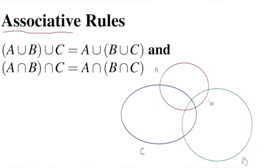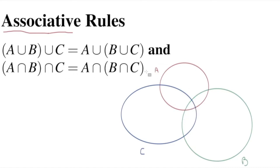Now let's look at the same pattern with the intersect operator. Taking A intersect B first gives the overlapping area of A and B, and then the intersection of that with C gives just a small triangular area where all three overlap. If we do it the other way - B intersect C first, giving the overlap of B and C, then intersecting with A - we end up with the same small triangular area. So A intersect B intersect C gives the same result regardless of the order of operations.